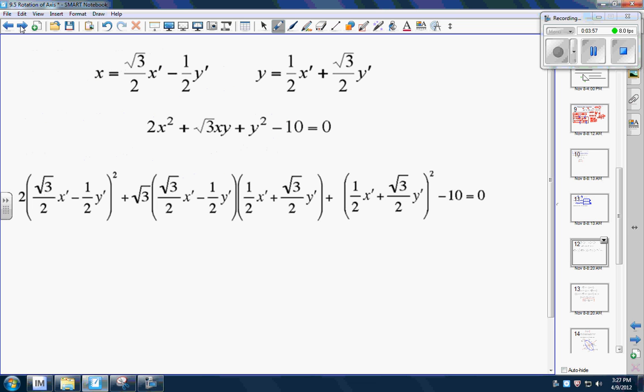Now this is where the math gets a little ugly. Here's your x. Here's the y that we came up with. Here's the original equation. So it's going to be a substitution. This guy is going here and here. This guy is going there and there. And it is a lot of double distributing with some ugly numbers.